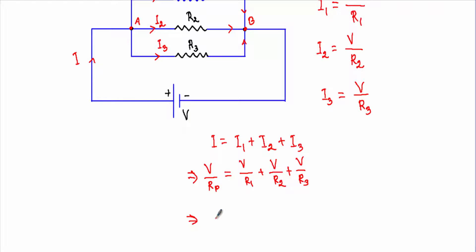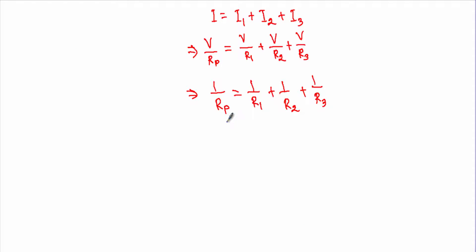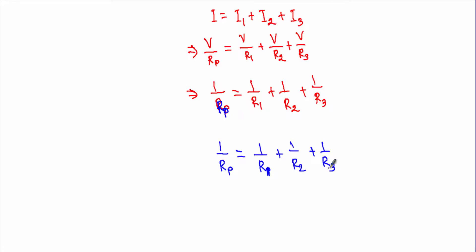So the total parallel resistance Rp satisfies: 1/Rp = 1/R1 + 1/R2 + 1/R3. When a number of resistances are connected in parallel, the reciprocal of the total resistance Rp is the sum of the reciprocals of the individual resistances. That is, 1/Rp = 1/R1 + 1/R2 + 1/R3.